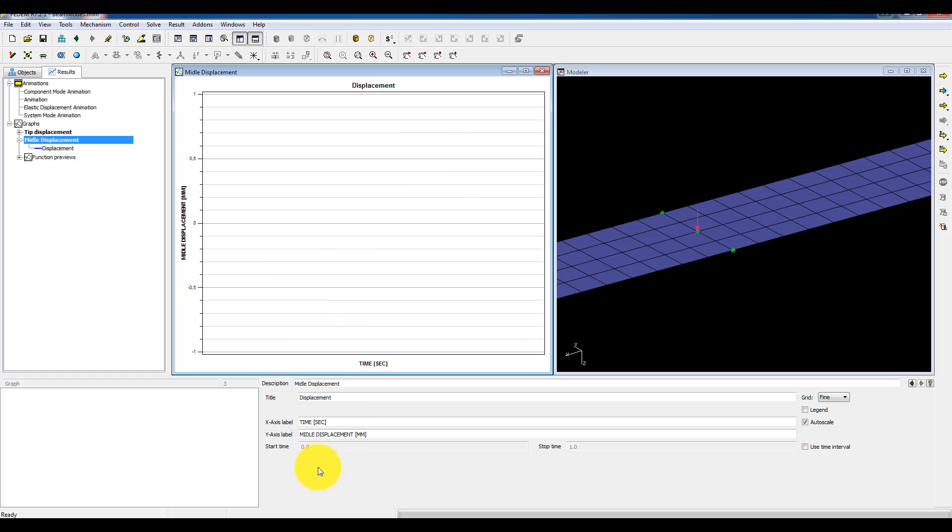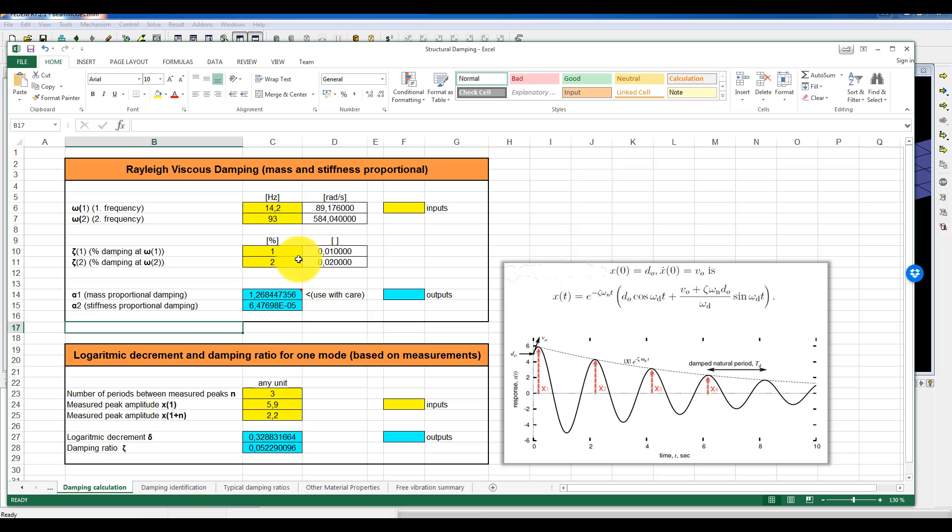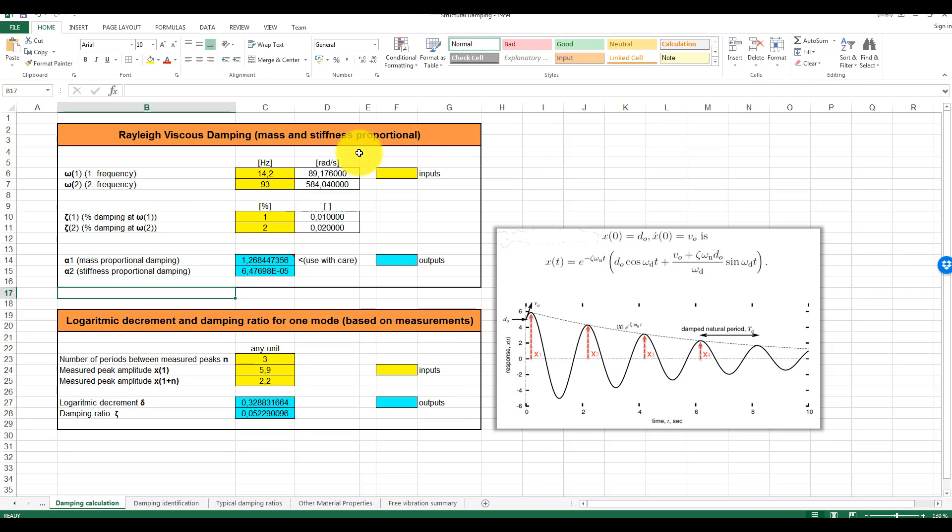So let's do some calculations. And then I use my spreadsheet. And here you can tell that I've used omega 1 of 14.2, which was the first mode, and then 93, which was the second mode. And in this example and this model, I used a steel material. And I estimate this c1 damping to be roughly 1% and c2 roughly 2%.